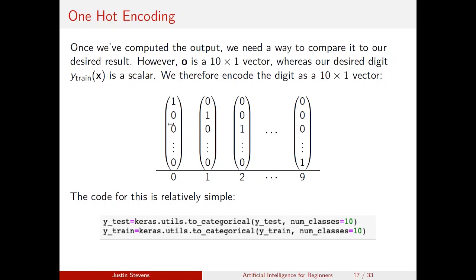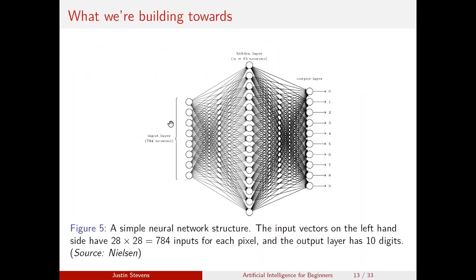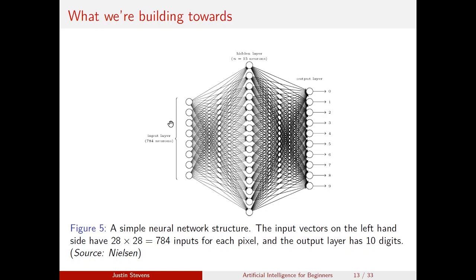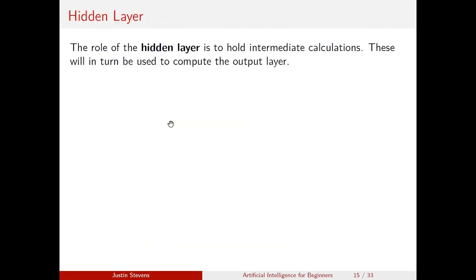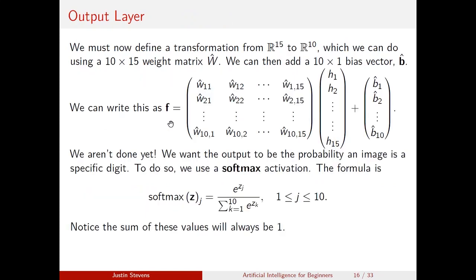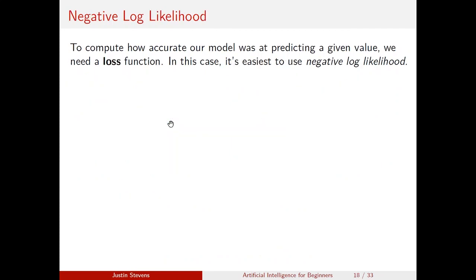There's one final component we need. We've gone through this long process with a bunch of variables, we get an output probability distribution. Say we're classifying two digits and we have 75% confidence for one and 25% for another — we need a way for the network to know how good of a job it did, like a grade from a professor. In neural networks, we define a loss function. To compute how accurate our model is, one popular option is mean squared error, but in this case it's easiest to use negative log likelihood.